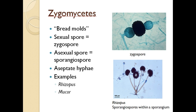The zygomycetes are the bread molds, but they aren't only growing on bread. Their sexual spore is called a zygospore, and their asexual spore is called a sporangiospore. They have aseptate hyphae. Our examples here are Rhizopus and Mucor. We're going to get a chance to see Rhizopus in the lab. One notable feature of Rhizopus is that it has structures called rhizoids, which are like roots.